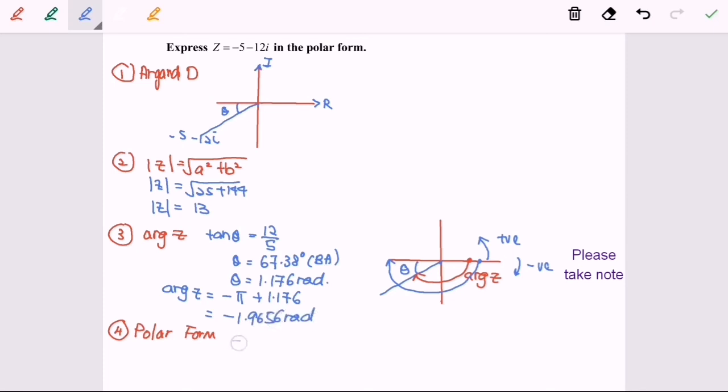So finally, in polar form, 13 cos negative 1.9656 plus i sine negative 1.9656.